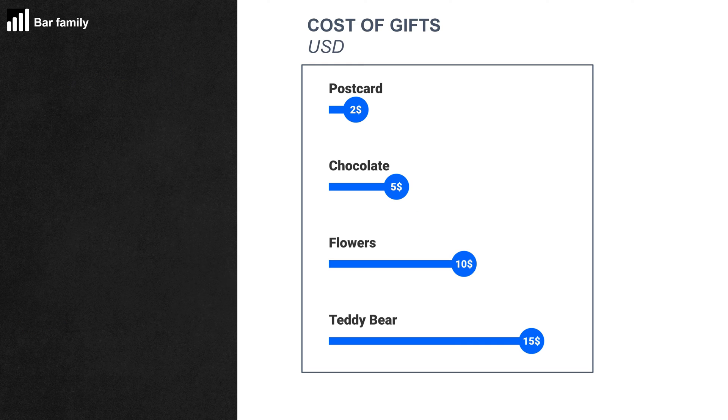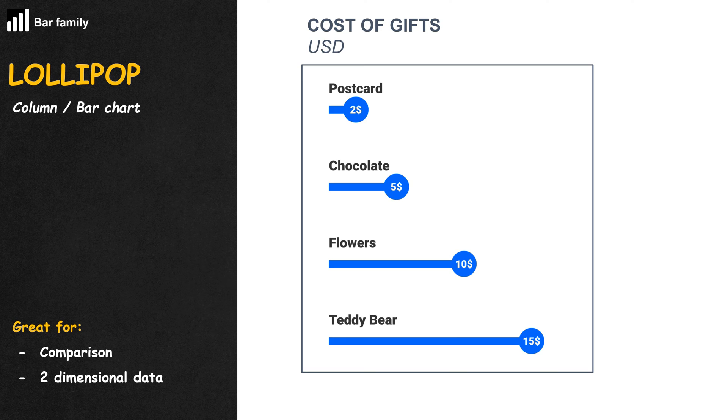When a data designer gets creative, those rectangles can turn into different shapes — say, a lollipop. We have a lollipop chart.